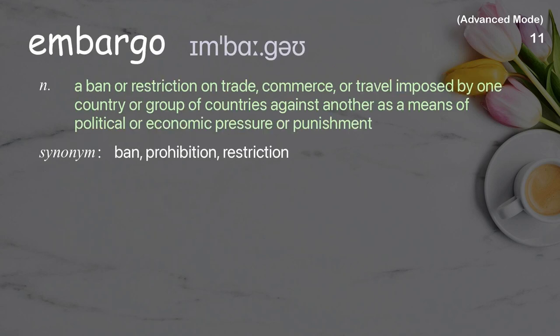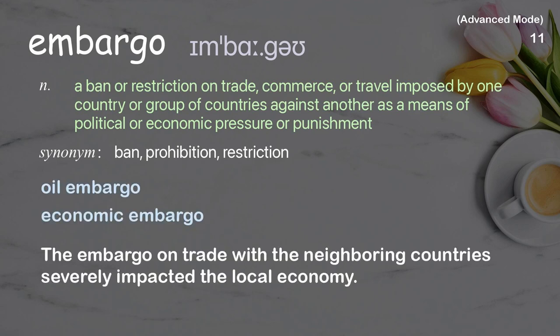Embargo: a ban or restriction on trade, commerce, or travel imposed by one country or group of countries against another as a means of political or economic pressure or punishment. Examples: oil embargo, economic embargo. The embargo on trade with the neighboring countries severely impacted the local economy.